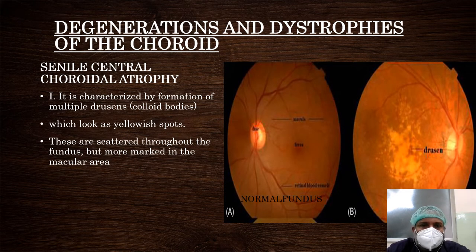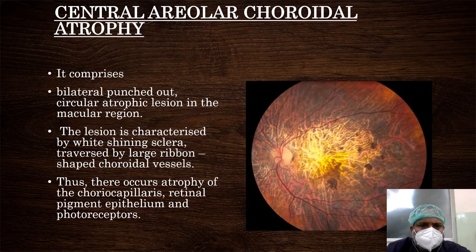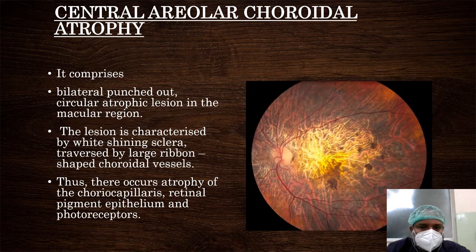Senile central choroidal atrophy is characterized by formation of multiple drusen — yellowish deposits in the macular region — scattered throughout the fundus but more marked in the macula. Next, central areolar choroidal atrophy comprises bilateral, punched-out, circular atrophic regions in the macular region. You can see small dots and punched-out lesions in the macula region, also with a tessellated fundus.